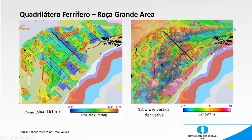In the Rosa Grande area, it's also a very special and interesting case in which we have very strong magnetic data associated with iron formations that occur here. The polarization information recovered many polarizable bodies along this magnetic structure. This banded iron formation is related to the gold mineralization here, which may indicate an important potential for gold mineralization in the area.